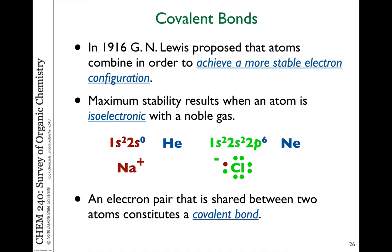Instead, things that can't easily give up one or two electrons to become plus one or plus two, or gain easily one or two electrons to become minus one or minus two, tend to form shared bonds where the electrons are not given up or taken, but they form overlapping orbitals and connected shared bonds. We call these covalent bonds. It allows the atoms to achieve stable electron configurations by sharing electrons between atoms, but does not form ions, so you don't have very high concentrations of charges on a particular atom. An electron pair that is shared between two atoms is what we call a covalent bond.